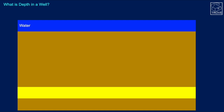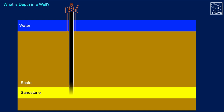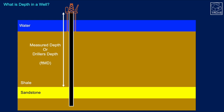Here you can see our model. We've got water, shale, and sandstone. We're going to drill our well and look at the various depth measurements. The first depth we look at is called the measured depth, or the driller's depth.